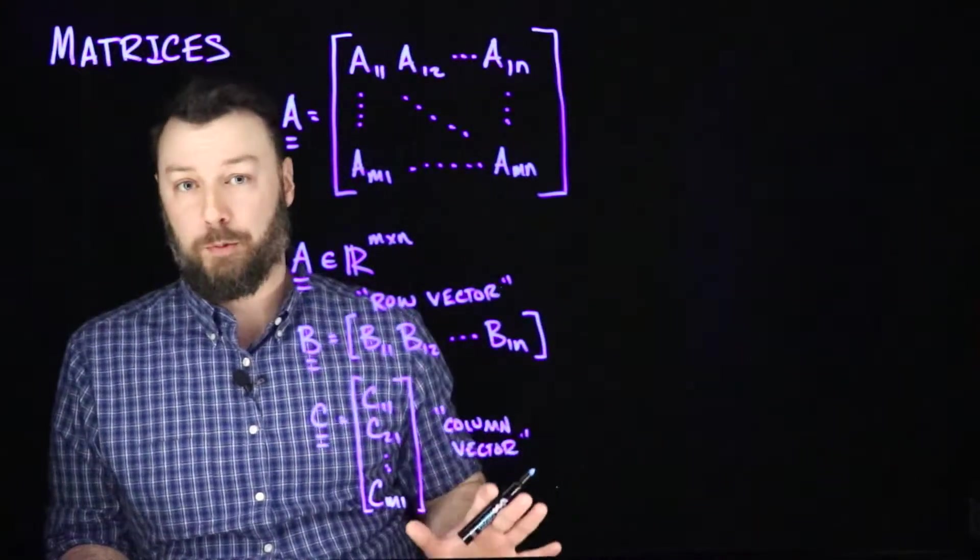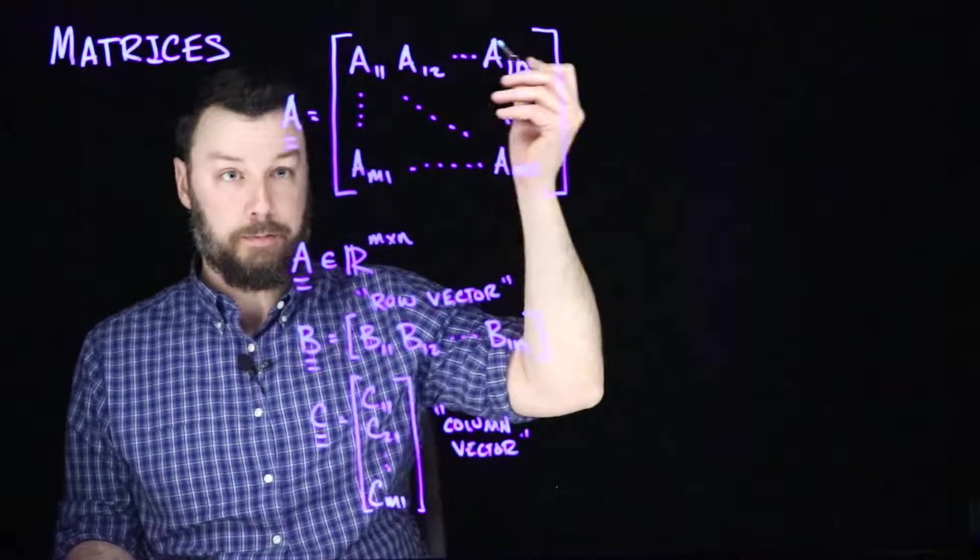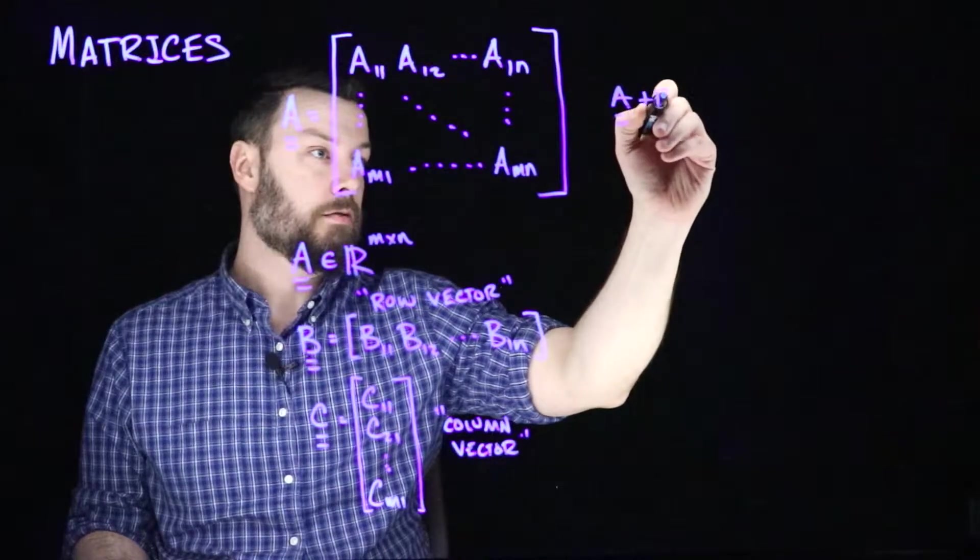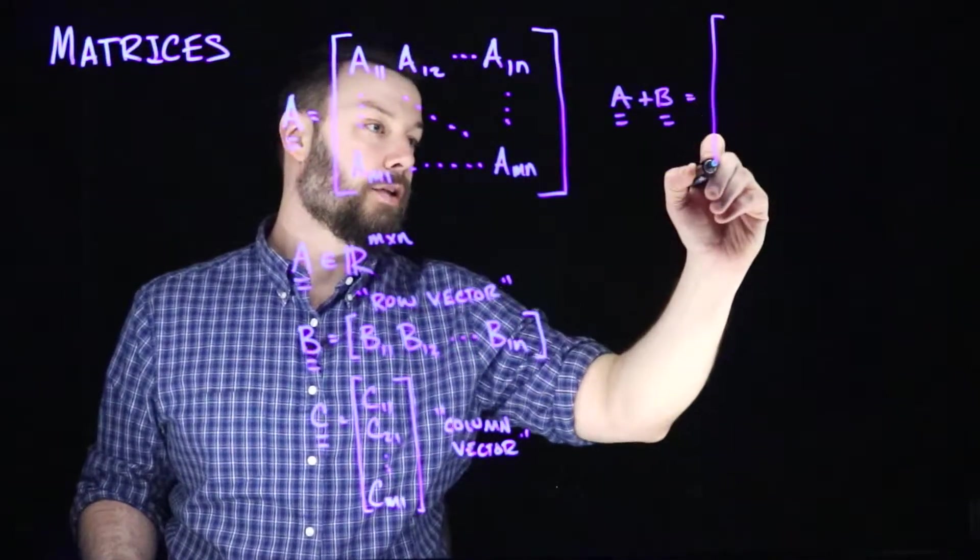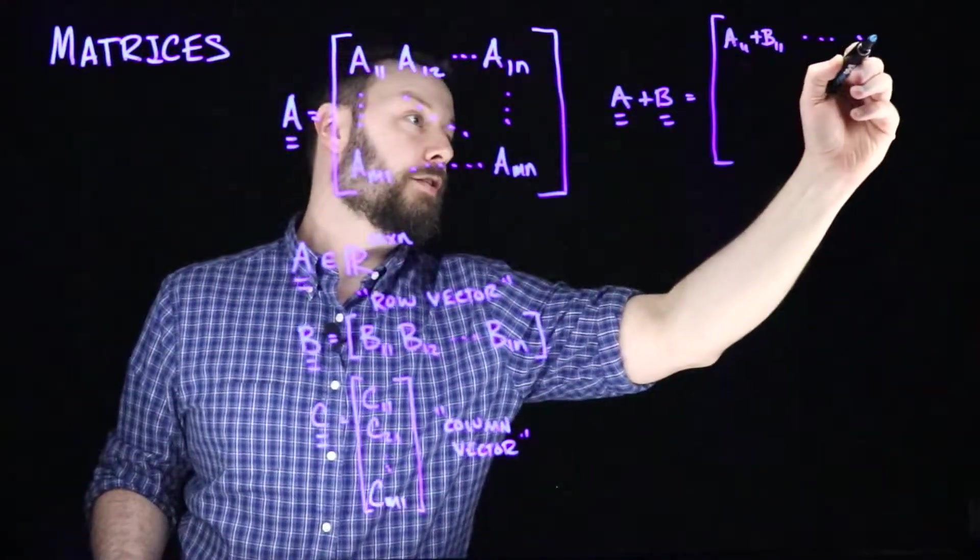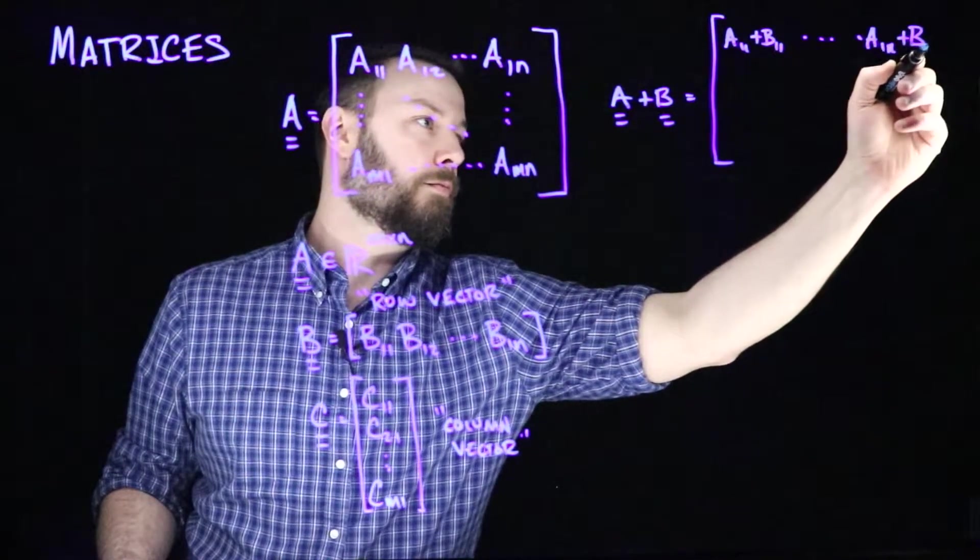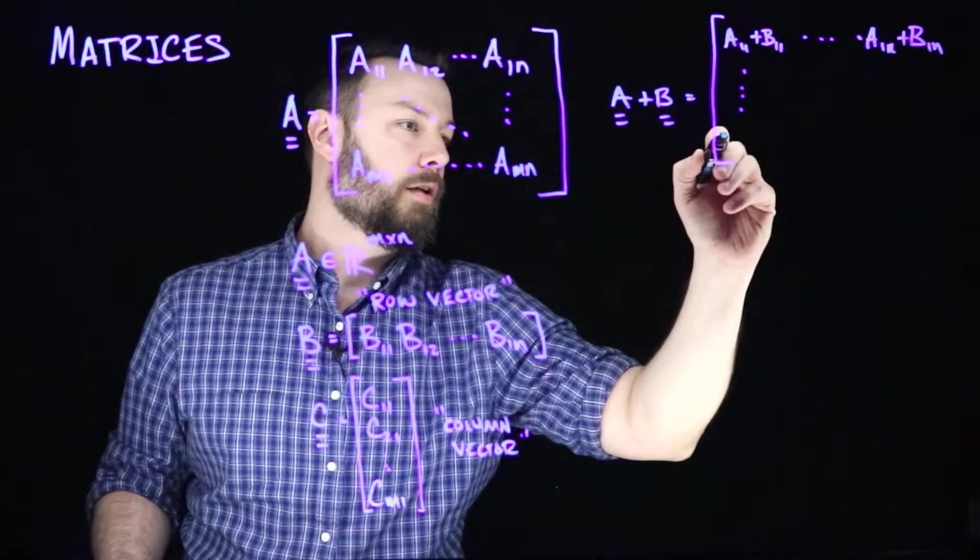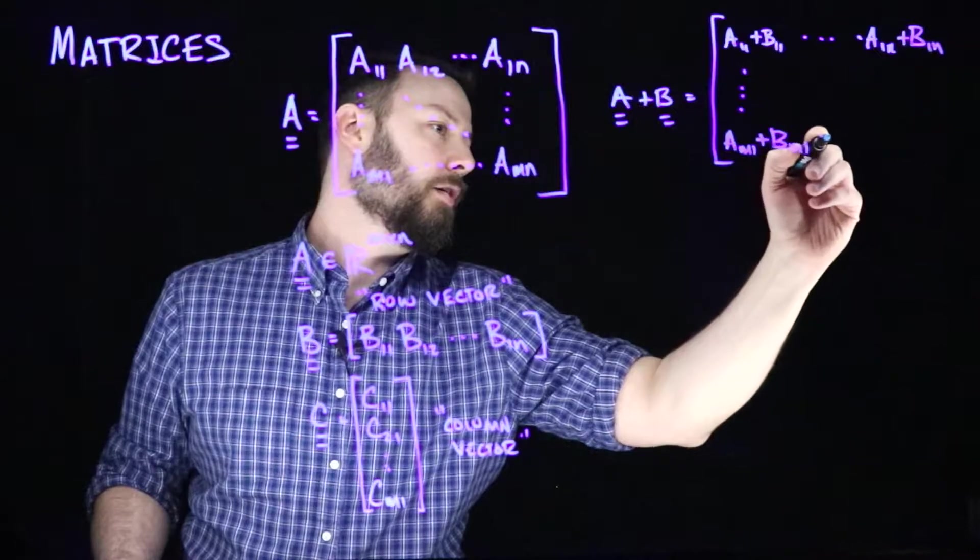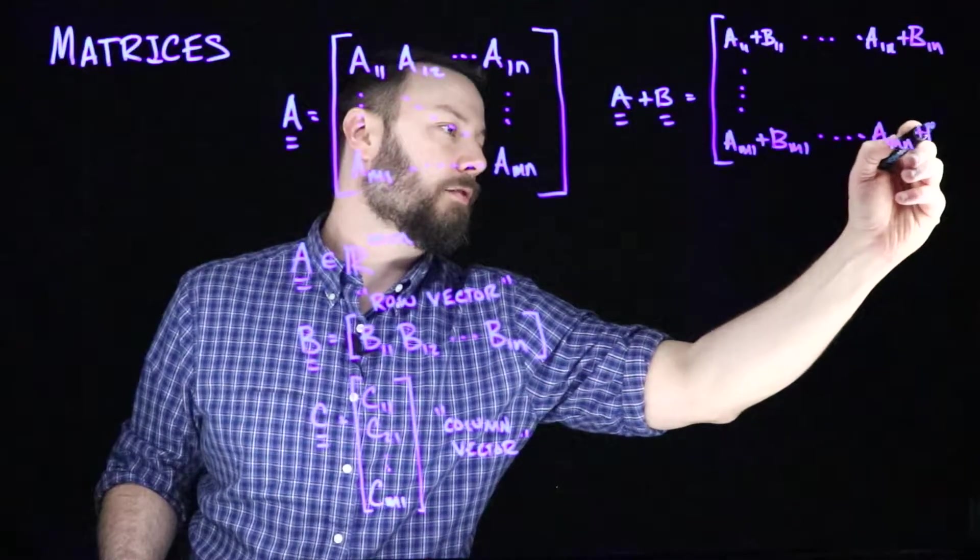Matrices add element-wise much in the same way that vectors do. If we have two matrices A and B, and they are the same size, then A plus B is a matrix in which we have A11 plus B11, and that's true for all of the entries, so A1N plus B1N, and then AM1 plus BM1, and same thing all the way across. This is just applying to all of the entries. Nothing surprising here, just what you would expect from the vector case.